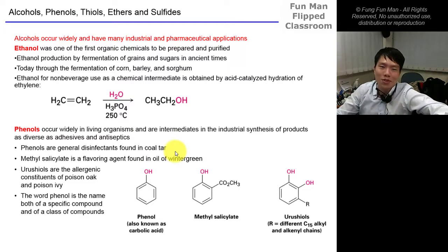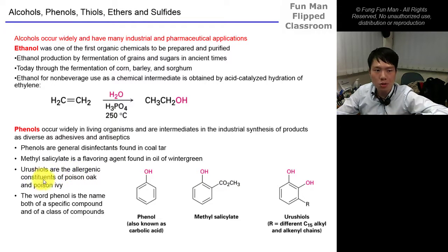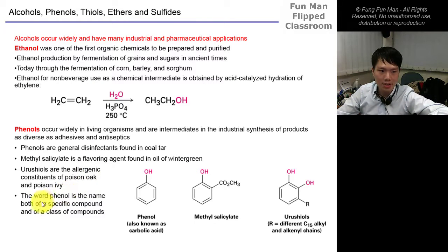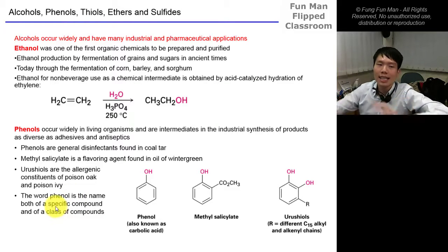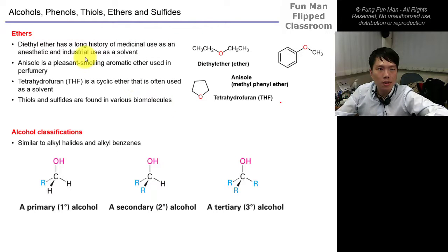Phenol occurs widely in living organisms and is an intermediate in industry to synthesize products, especially glues, gels, and antiseptics. Methyl salicylate is a flavoring agent found in oil of wintergreen and is a form of ester. Urushiols are the allergenic constituents of poison oak and poison ivy. The word phenol is the name of both a specific compound and the class of compounds with that functional group.